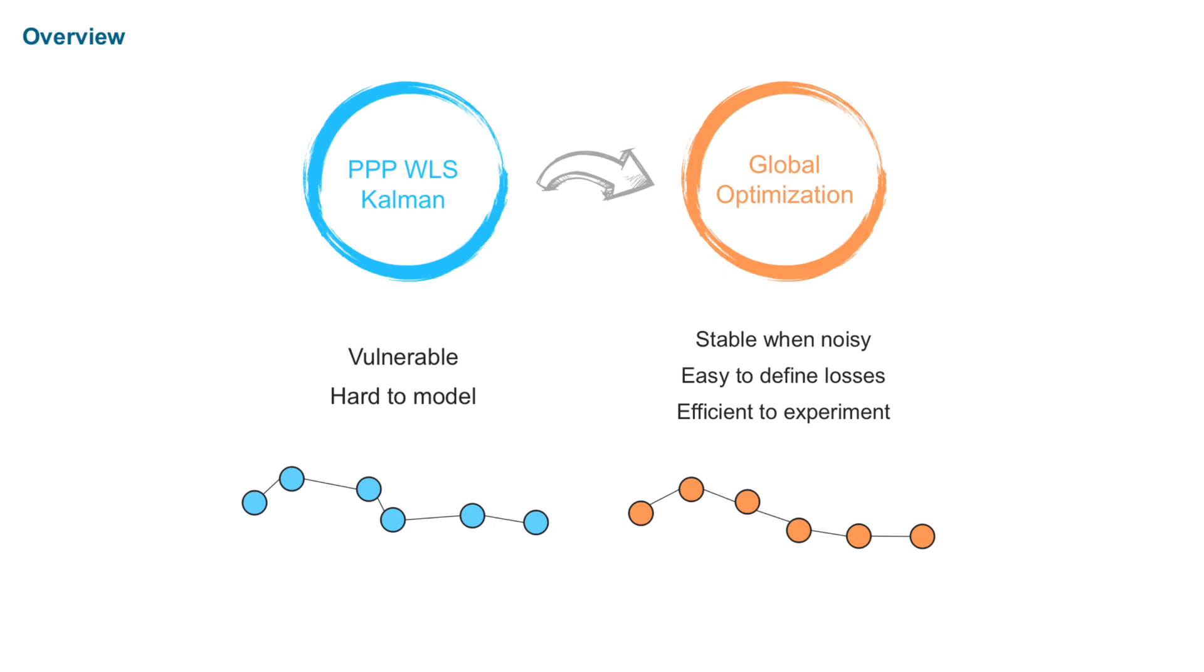We may also extend WLS and the Kalman filter solution to take more points on a track into consideration. But it is not so easy to model all kinds of constraints. On the other hand, if we use neural network model or factor graph optimization method, we can add the constraints easily. It is more efficient to do experiments.